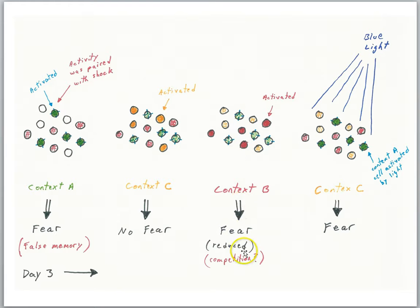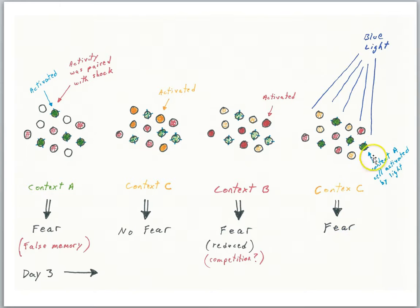Nevertheless, there was somewhat of a fear response in context B. If you put the animal in context C while shining the blue light — activating the engram A cells — you get fear, because the A cells have been linked with the shock. The animal never experienced a shock in context A, but you can get them to show fear by simply reactivating those engram cells in whatever context. In this case, it was context C. So scientists were successful in creating a false memory.